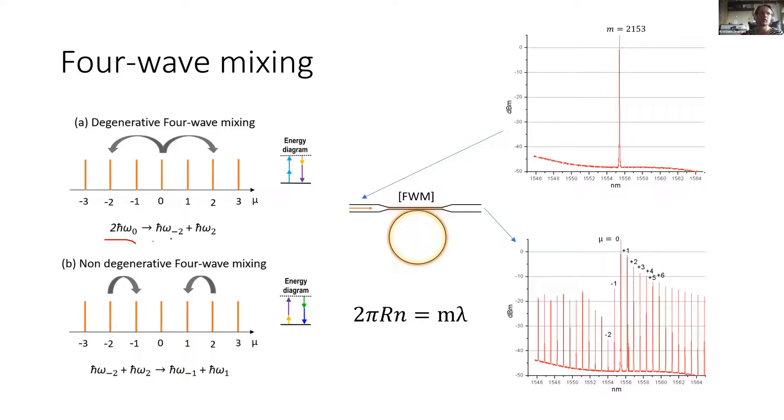They are converted into two different photons and the energy conversion law is conserved. Then there happens non-degenerate four-wave mixing and these two combined can excite hundreds of modes. We can see here what is after the four-wave mixing, that each of these integer number of modes are excited.